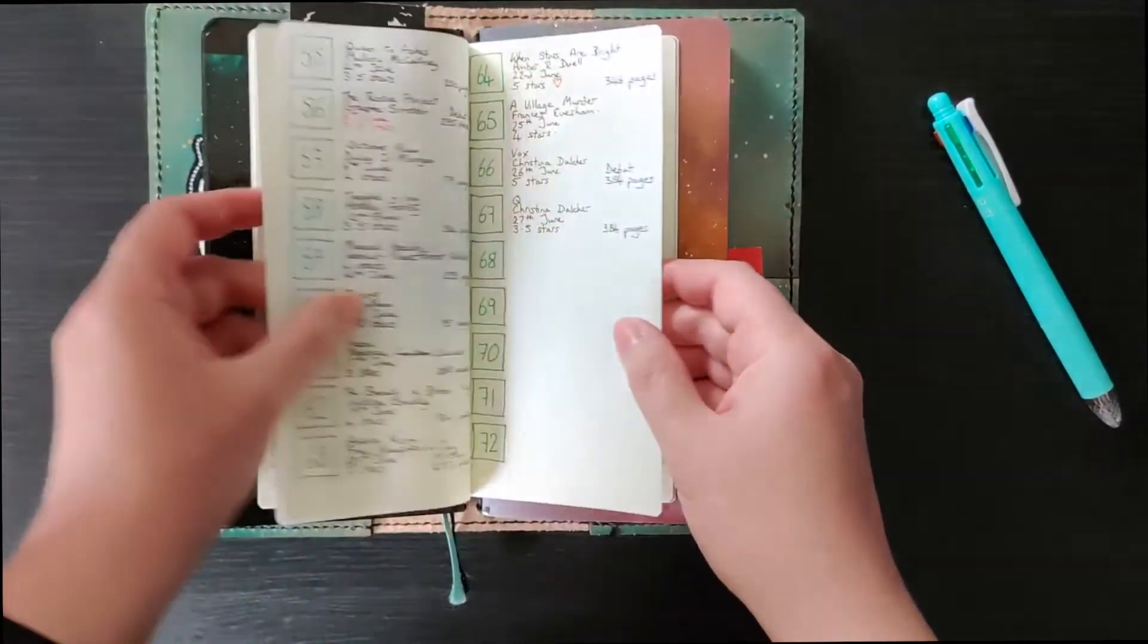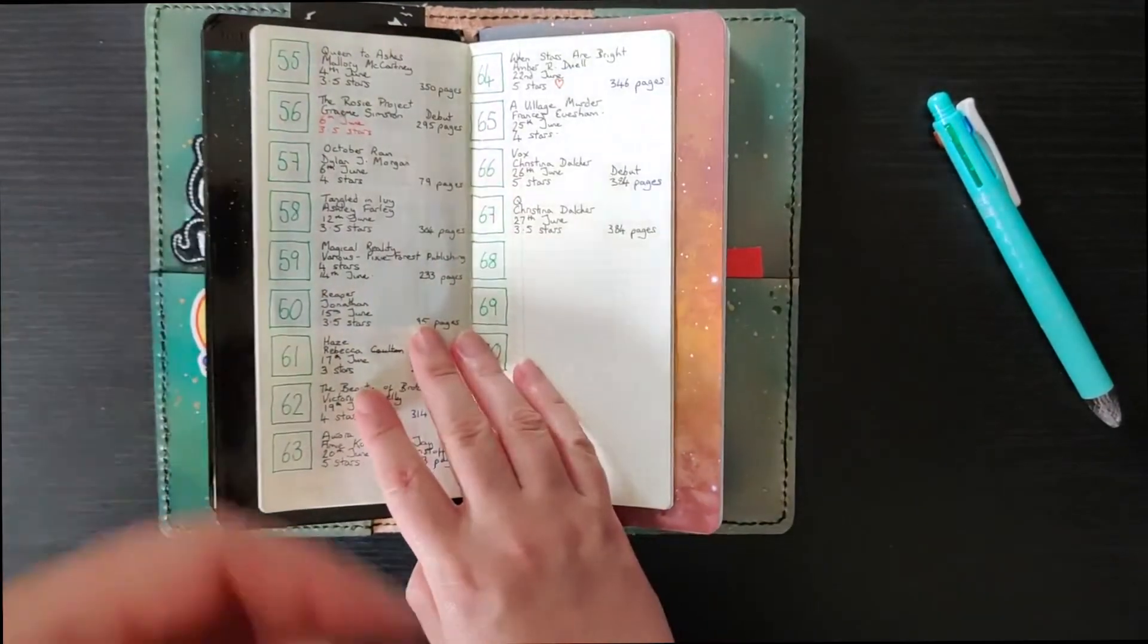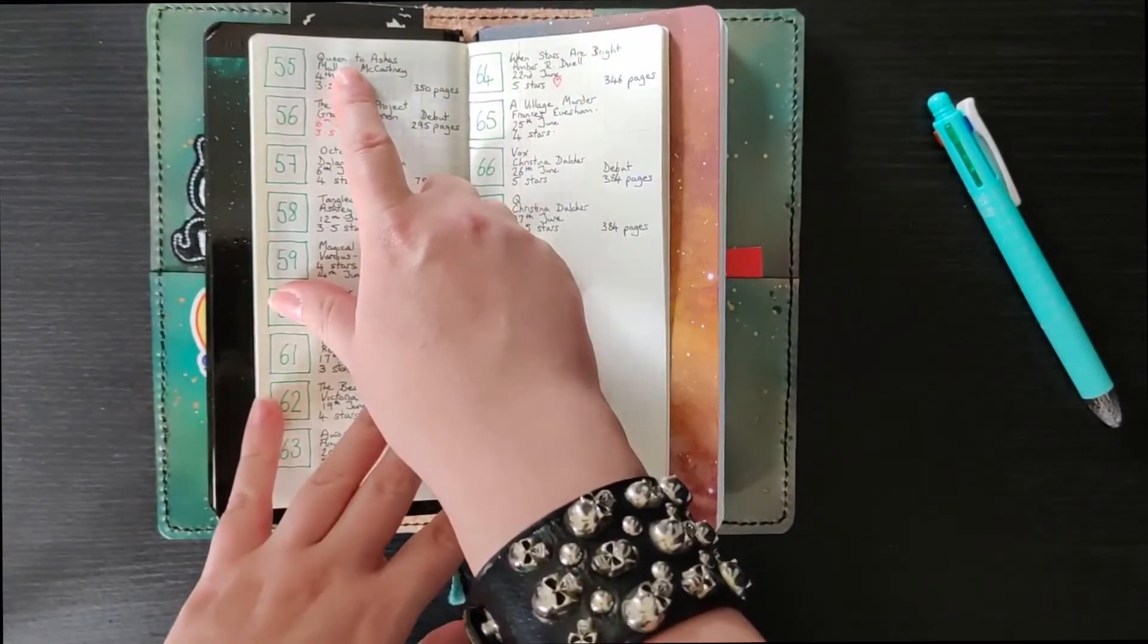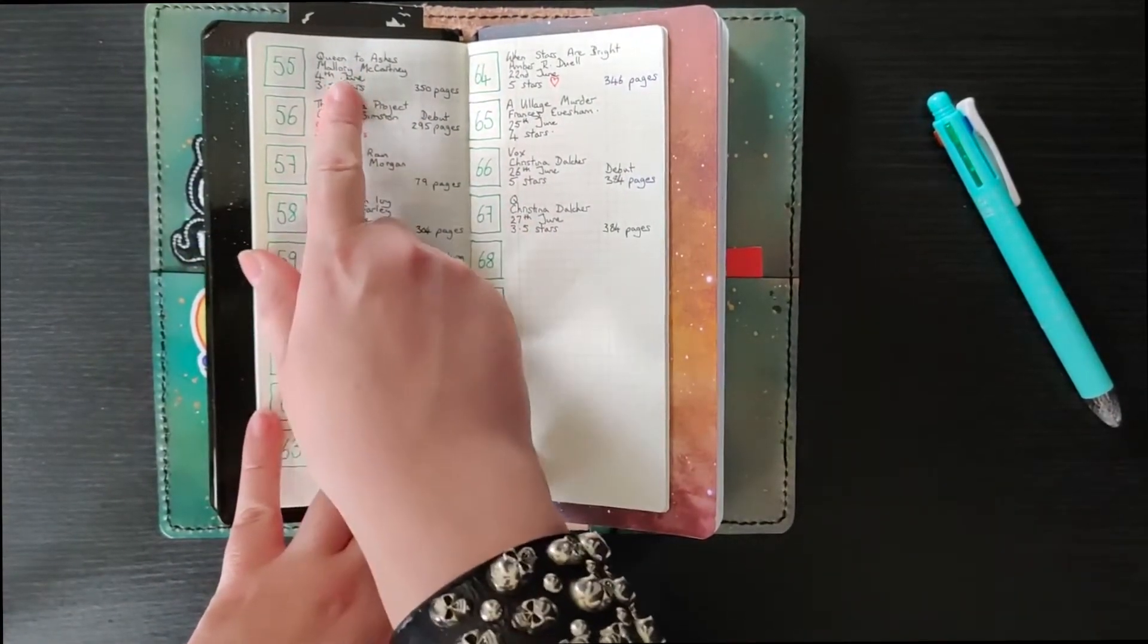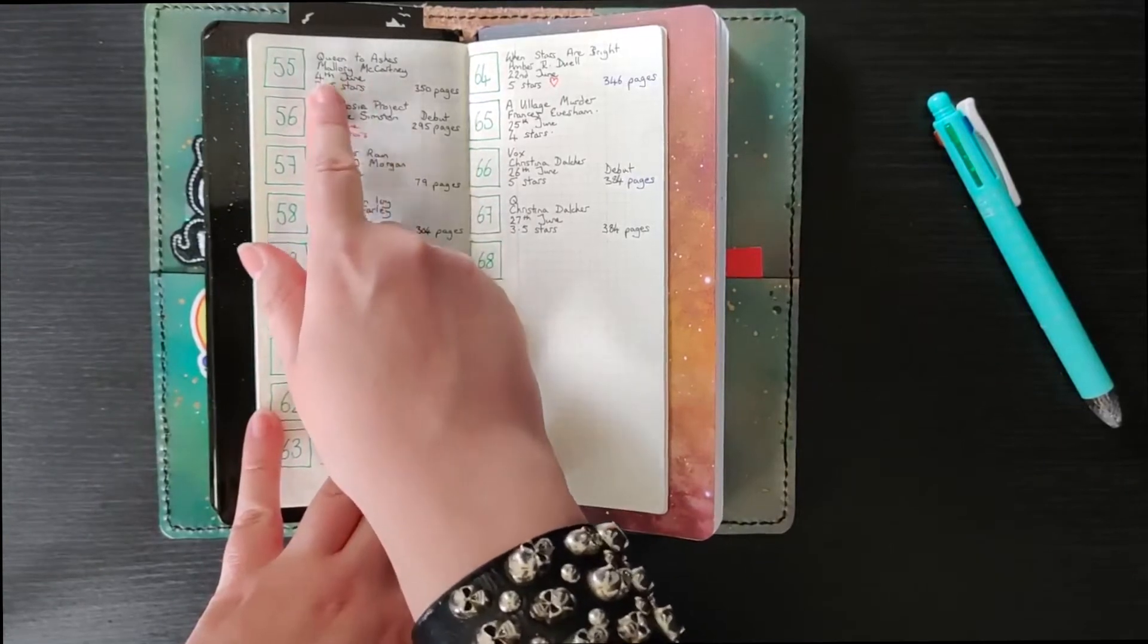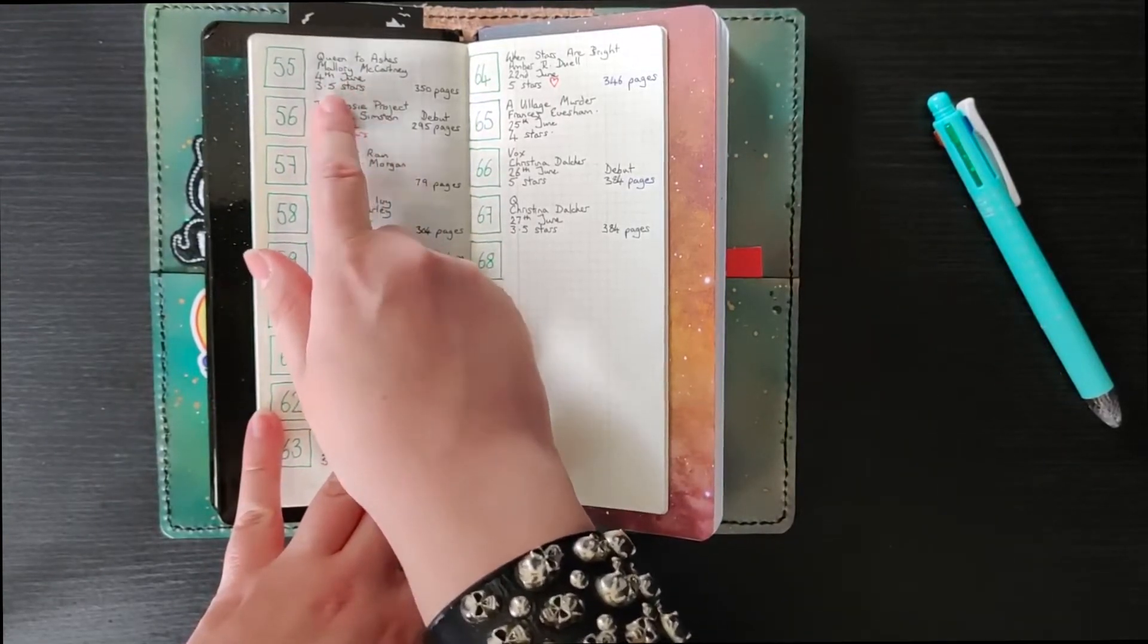I use different pens depending on what I happen to have to hand. It's really simple so I make a note of the book title, I make a note of the author, the date that I finished reading the book as well as my star rating.